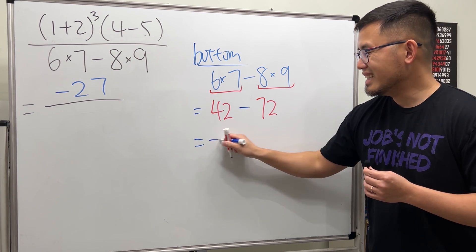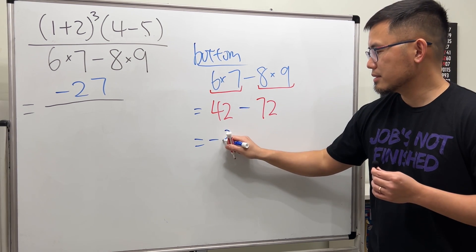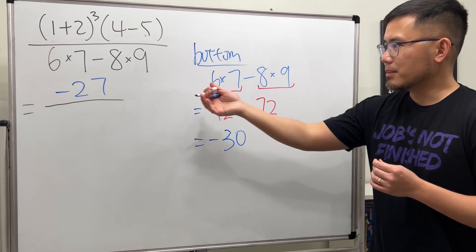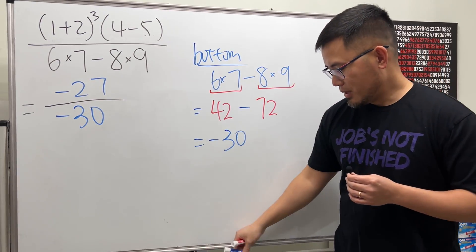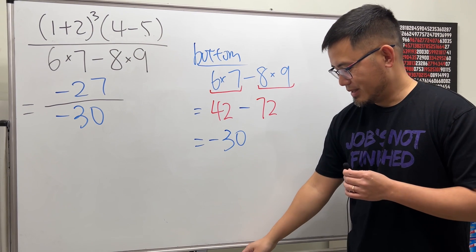Have a look: 42 - 72, we get negative, and then you get 30 for that. So in fact, the bottom right here is -30. Okay, can we do anything else?